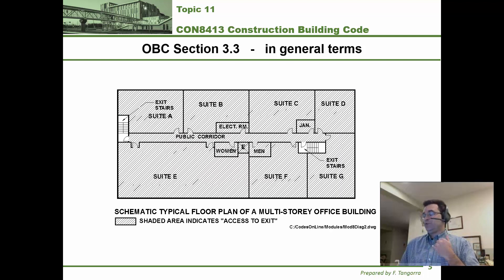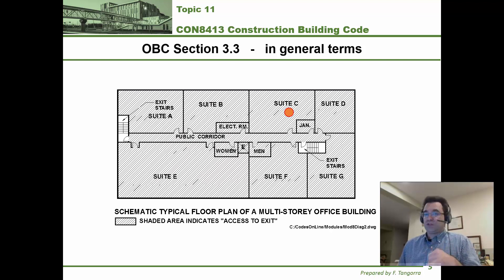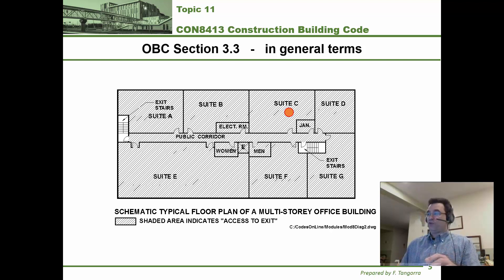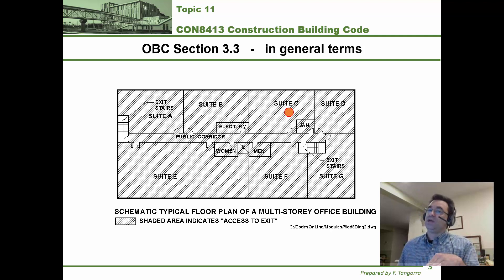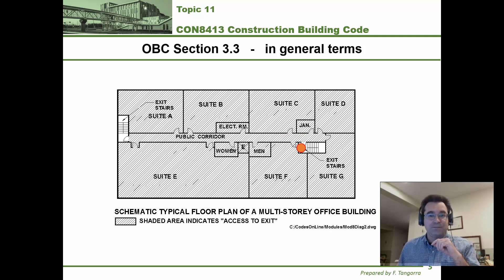For example, if you're in suite C and want to get to an exit, section 3.3 covers all the safety requirements that get you from anywhere in suite C, through the doors and the public corridor and through an exit. That's what we're covering today.